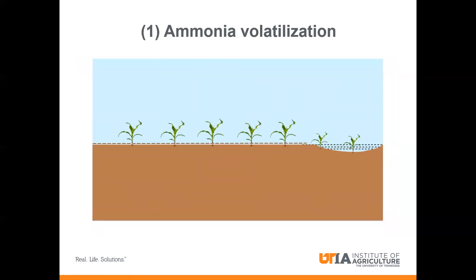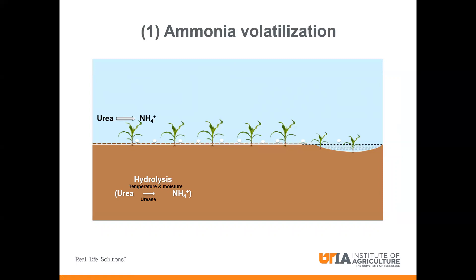Let's begin with our first nitrogen loss pathway: ammonia volatilization. The picture here shows a corn plant at about the V4 growth stage. This is when we typically recommend growers to side dress their nitrogen between V4 to V6 growth stage. Most growers typically put about two-thirds of their total recommended nitrogen at this time. When growers surface apply urea or urea ammonium nitrate, that urea is converted to ammonium in the presence of urease enzyme as well as adequate temperature and moisture.